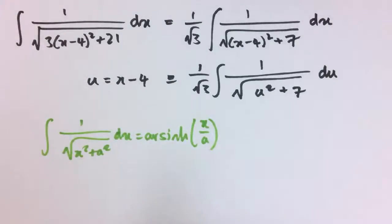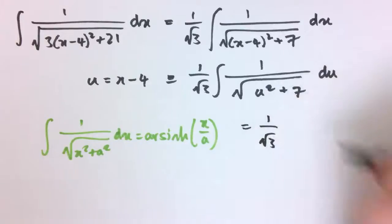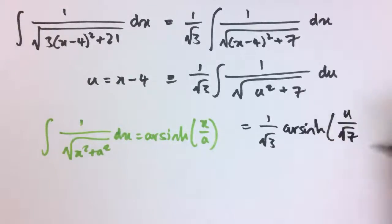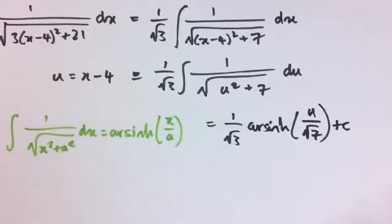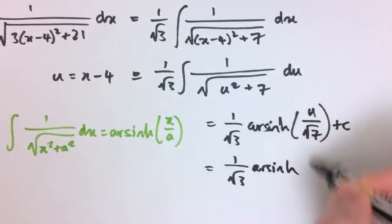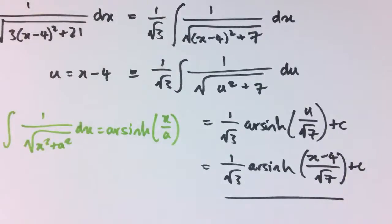And then our table of integrals tells us that 1 over the square root of x squared plus a squared integrates to arsinh of x over a. So we have exactly that here with a equals the square root of 7 and u in place of x. So this is 1 over the square root of 3 times arsinh u divided by the square root of 7 plus c. And we remember that u was x minus 4, so this is 1 over root 3 times arsinh of (x minus 4) over root 7 plus c.